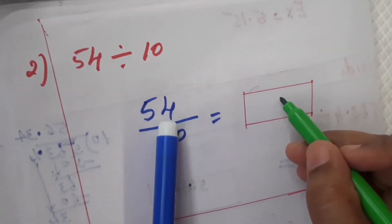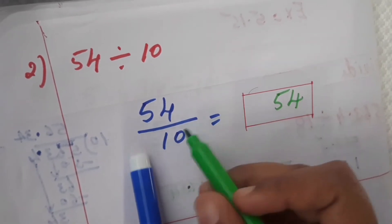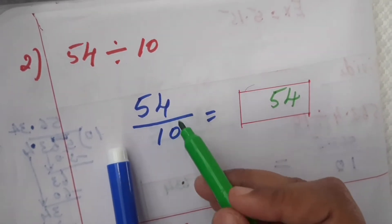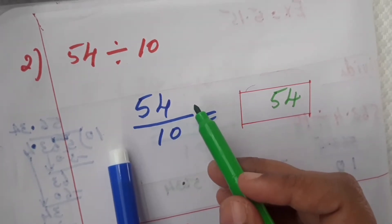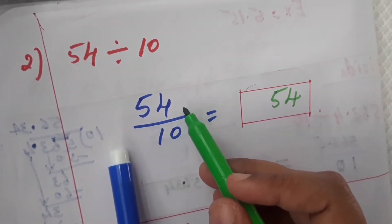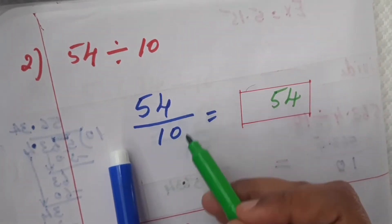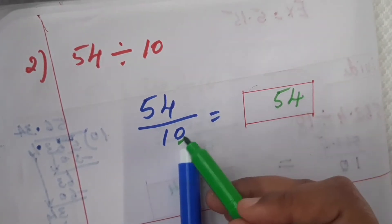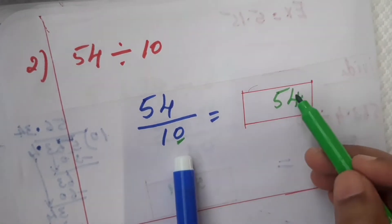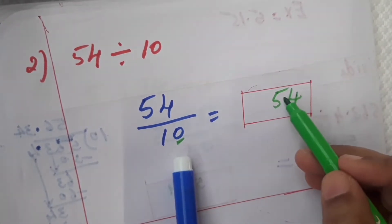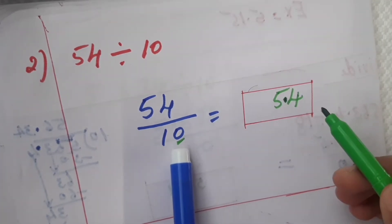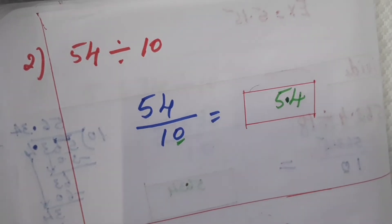Write the numerator 54. There is no decimal point, so count the zeros in the denominator. There is only one zero, so after one digit from the right, place the decimal point. The answer is 5.4.